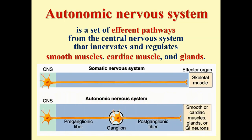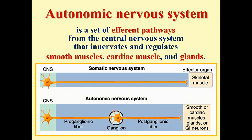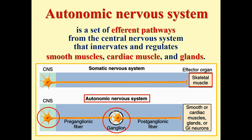In the autonomic nervous system, the first neuron is located in the spinal cord and its axon goes to an autonomic ganglion — this first axon is called the preganglionic fiber. Then a second neuron from the ganglion sends its postganglionic fiber to effector organs, which are smooth muscles, cardiac muscle, glands, or sometimes gastrointestinal neurons.